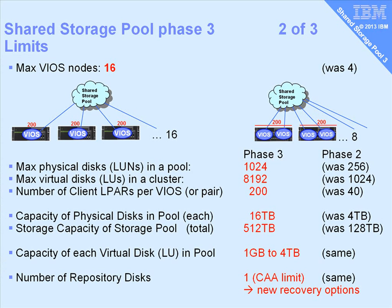The actual pool size: the maximum LUN size that can go into the pool is 16 terabytes, and the pool itself can total 512 terabytes — half a petabyte. These are seriously big pools, and these numbers are what have been tested at the AIX and VIO server labs, so they are tested limits. We could probably go higher if you really want to — just get in contact. The logical units given to a client can be up to 4 terabytes. There's still a one-repository-disk limit, but there are new recovery options.